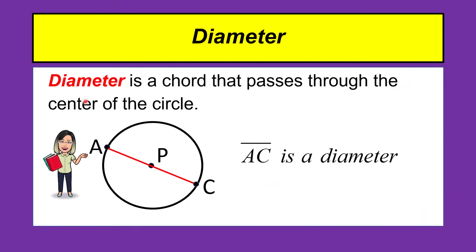A diameter is a chord that passes through the center of the circle. We have segment A-C. The endpoints are points A and C, and the segment passes through the center of the circle. If the chord passes through the center, that segment can be considered a diameter. Therefore, segment A-C is a diameter.